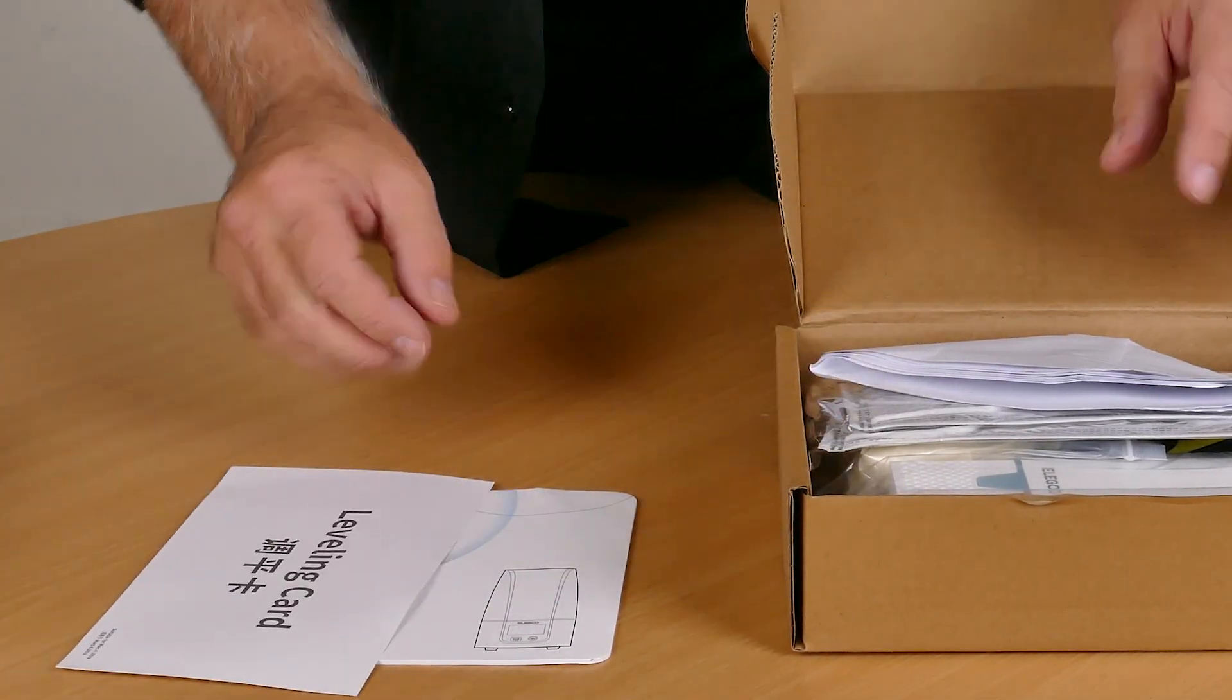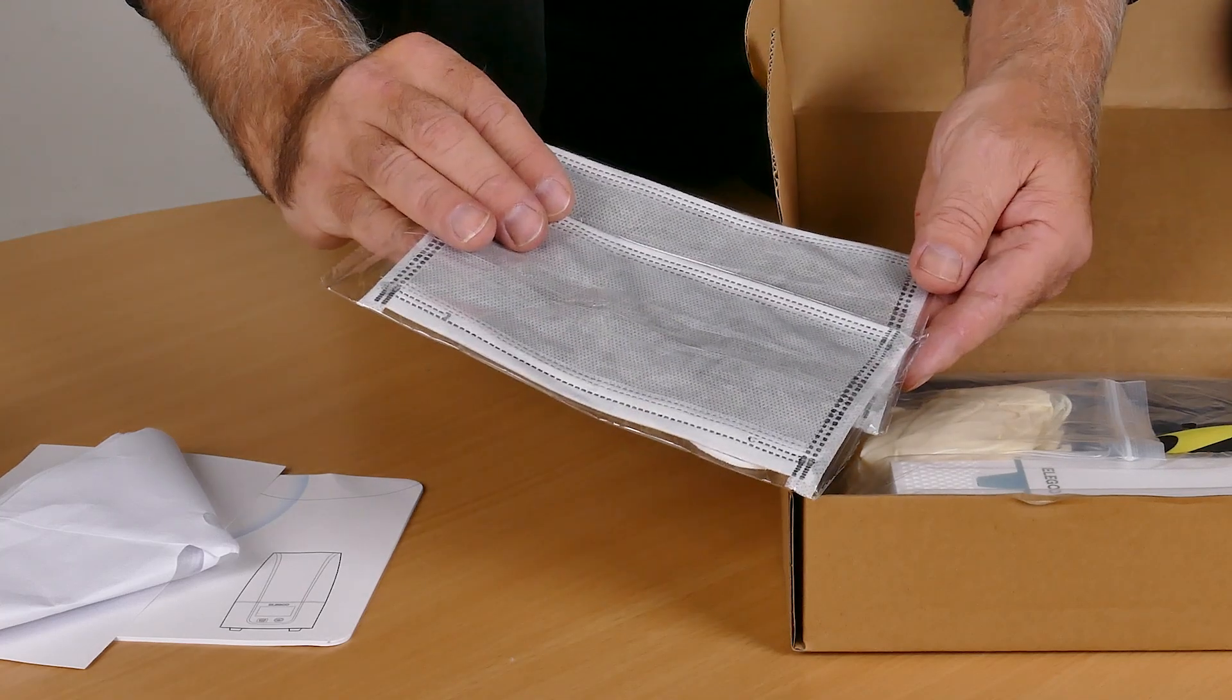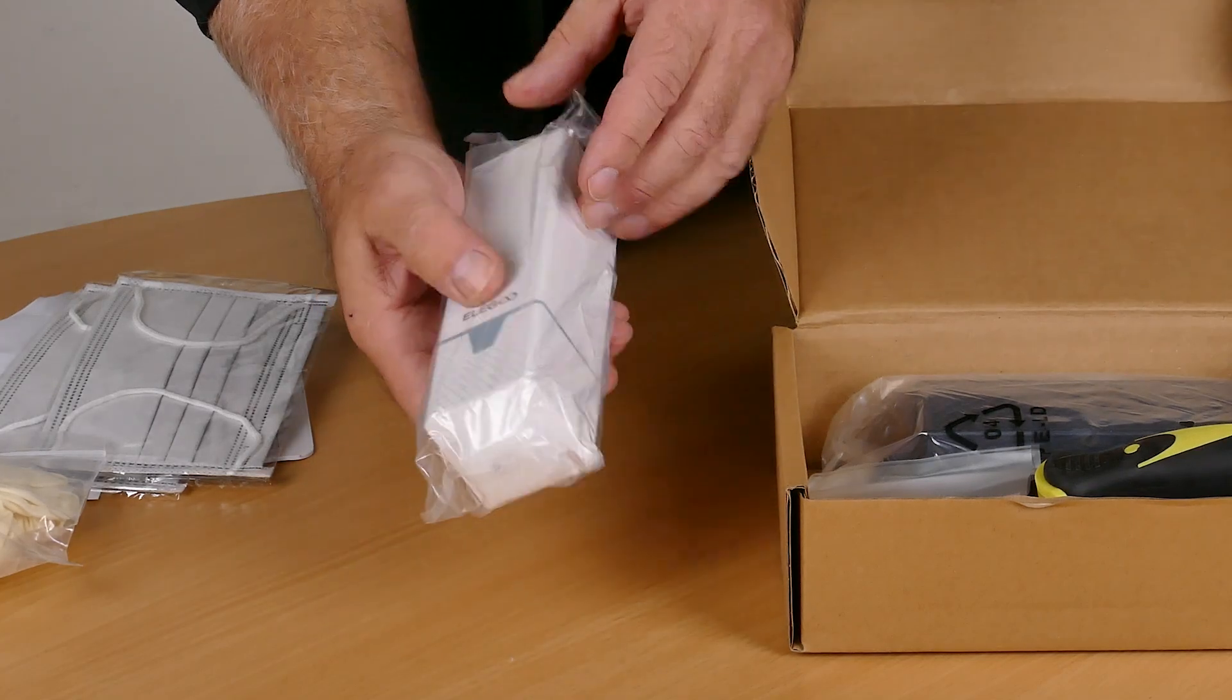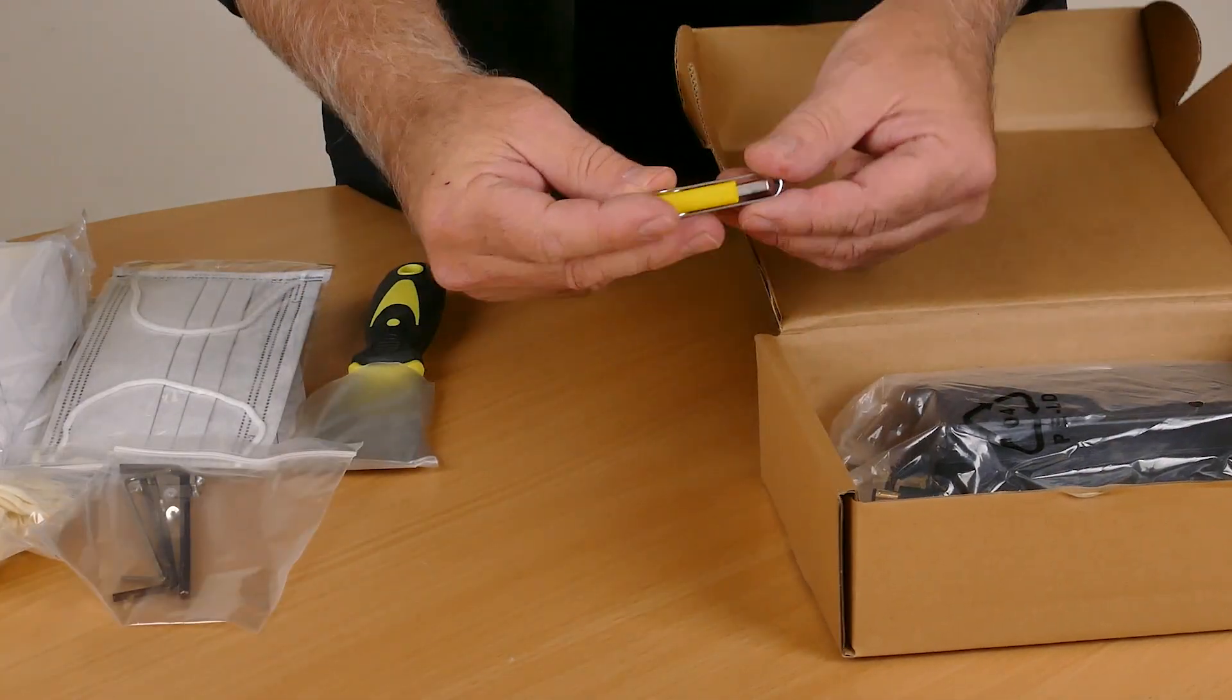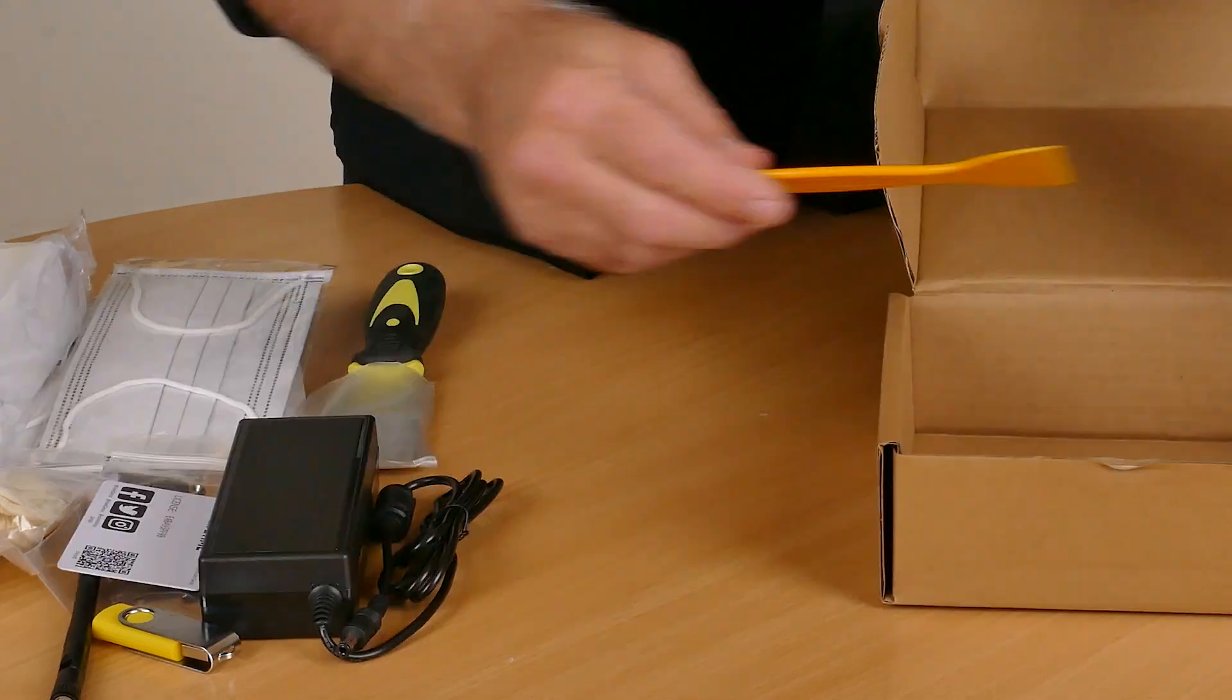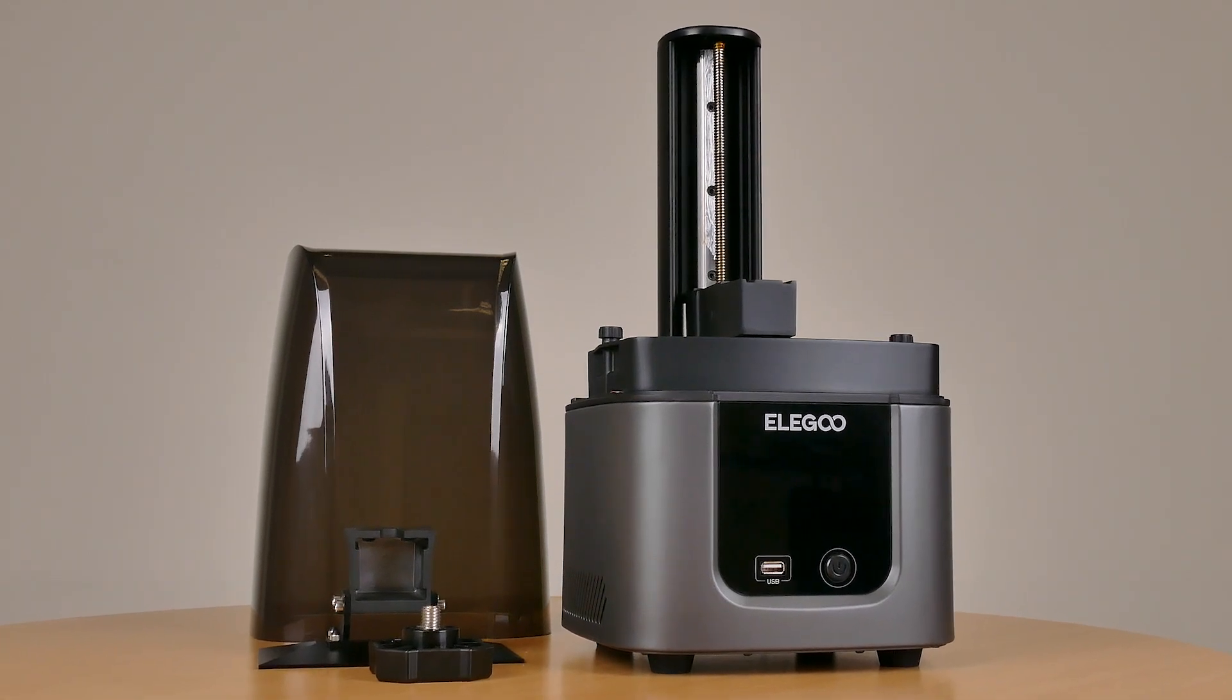The operating manual, the leveling card, five resin filters, a couple of masks, some rubber gloves. This is something I haven't seen before - an air filter to go inside the machine. Some hex keys to level out the build plate, USB stick that holds some of the software, the power supply, and a scraper.